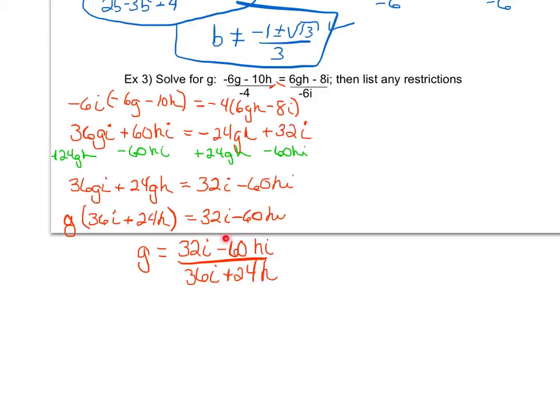Giving me g equals 32i minus 60hi all over 36i plus 24h. I cannot cancel because I'm adding and subtracting, I'm not multiplying. However, I can say that since every single term is divisible by 4, I can reduce all terms by 4, giving me g equals 8i minus 15hi all over 9i plus 6h.